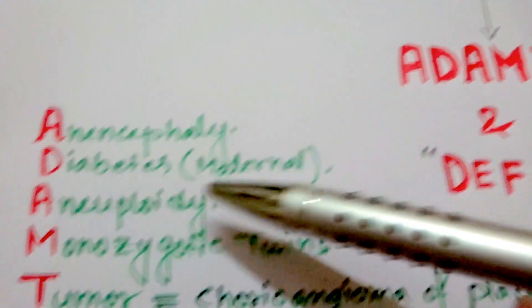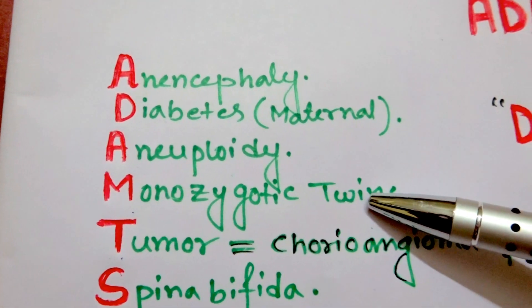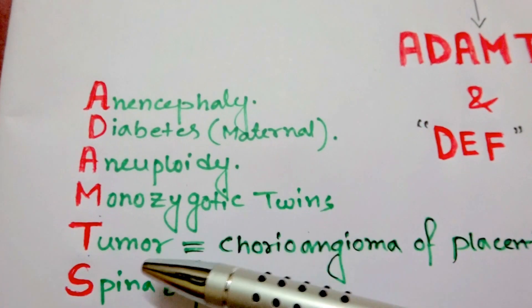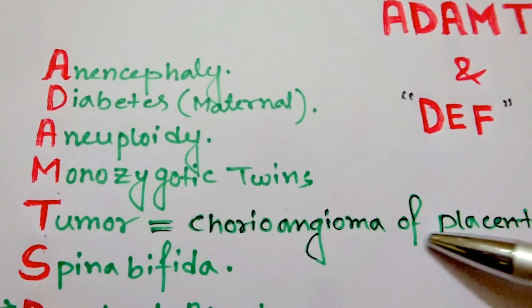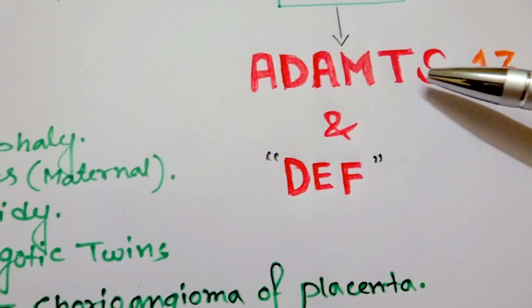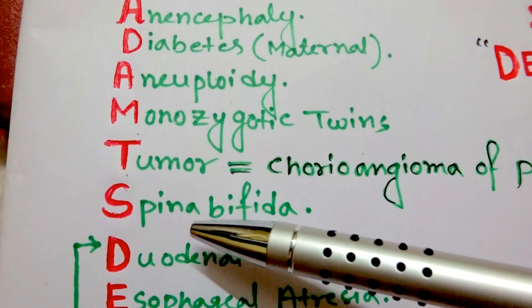Then for M it is monozygotic twins. For T it is tumor, that is chorioangioma of placenta. For S it is spina bifida.